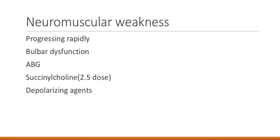What are the special concerns for patients with neuromuscular weakness? If a patient has rapidly progressing neuromuscular weakness that may soon compromise the airway or cause bulbar dysfunction, we want to intubate before bulbar dysfunction is very advanced so the patient can ventilate and protect the airway. We can also consider intubating these patients when they have abnormal blood gas measurements.